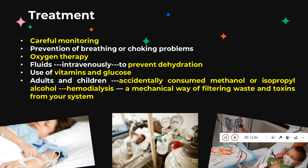Coming to treatment options: careful monitoring is very important. Sometimes oxygen therapy is given. Fluids may be given intravenously because vomiting can cause weakness and dehydration. Vitamins and glucose may be suggested to increase strength. In cases of accidental methanol consumption, hemodialysis may be suggested — this machine filters waste from the body just as the kidneys do, removing all toxins to reduce the effect of alcohol poisoning.